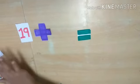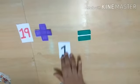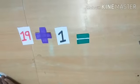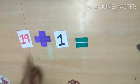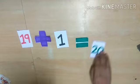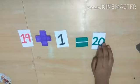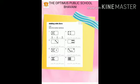19 plus 1. And then we get the next number of 19 is? Yes, 20. The next number of 19 is 20. I hope you are clear.